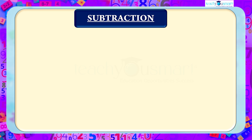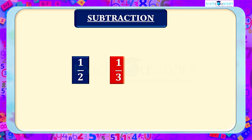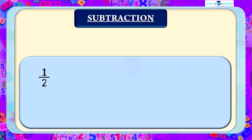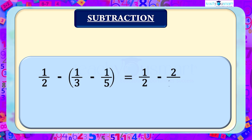Now let's look at subtraction of rational numbers, continuing with the same numbers 1/2, 1/3, and 1/5. The first grouping: (1/2 − 1/3) − 1/5 = 1/2 − 2/15 = 11/30.